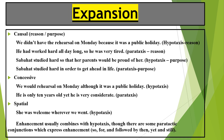In enhancement we also have causal relationships such as reason or purpose, concessive, and spatial or place. Example: 'She was welcome wherever she went' — this refers to place. So these are your circumstantial features. Enhancement usually combines with hypotaxis, though there are some paratactic conjunctions which also express enhancement.